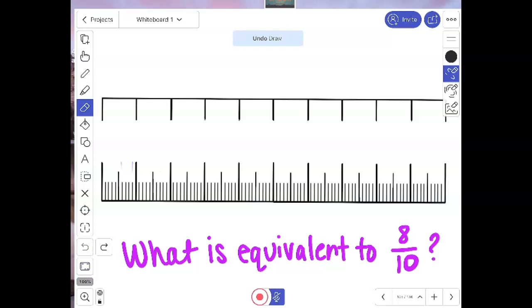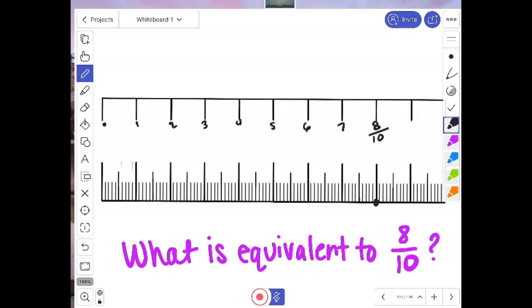Okay, so back to others. What's equivalent to eight tenths? So zero, one, two, three, four, five, six, seven, eight tenths would be right there. So what would this be? Zero, ten, twenty, thirty, forty, fifty, sixty, seventy, eighty. So eight tenths is equivalent to eighty hundredths.